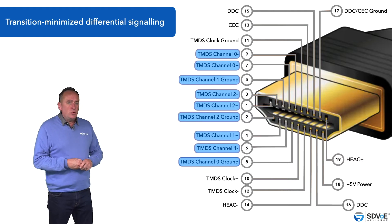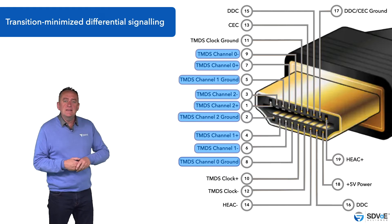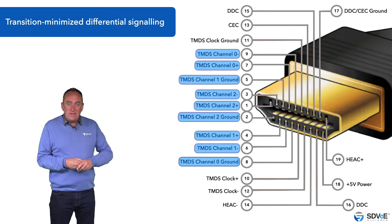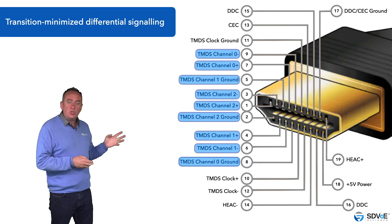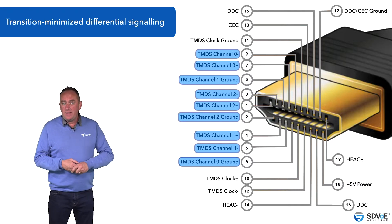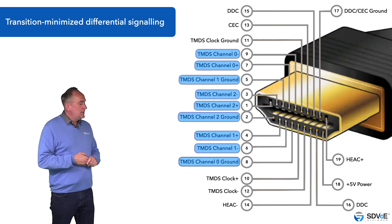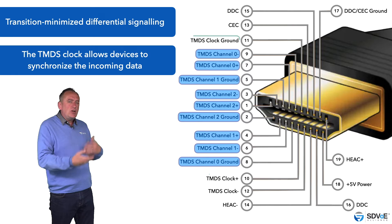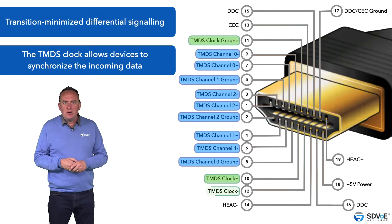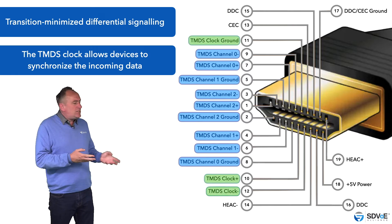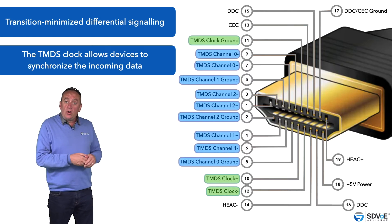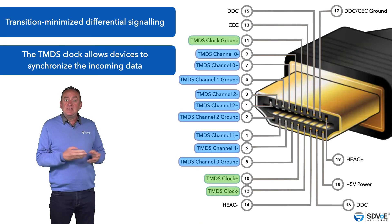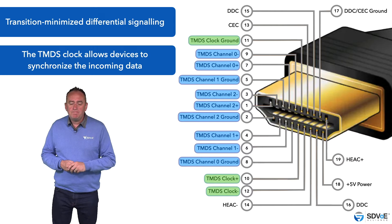Three audio and video channels travel through two pins each, starting at channel 1, and each of these channels has a ground connection or shield which protects it from any interference. The TMDS clock allows devices to synchronize the incoming data. These TMDS channels, the clock, and the shields make up the bulk of the cable pairs inside the HDMI cable.